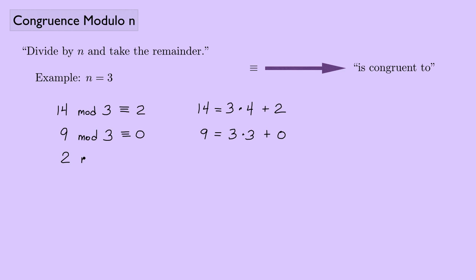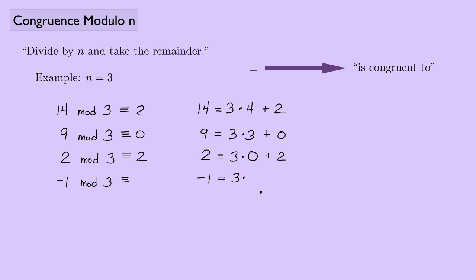That's because 9 equals 3 times 3 plus 0. How about 2 mod 3? Well, 3 going into 2 — if I have 2, can I write that as 3 times something plus a remainder? Yes: 3 times 0 is 0, and then I have a remainder of 2, so 2 mod 3 is congruent to 2. How about negative 1? Imagine writing negative 1 as 3 times something plus a remainder.